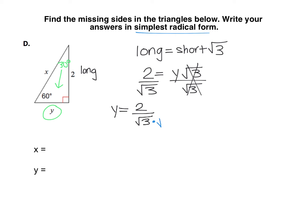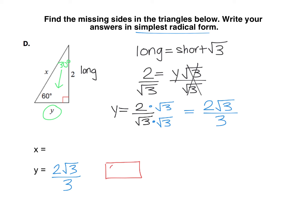To undo a divide by root 3, we multiply both the numerator and denominator by root 3. That makes 2 root 3 on top, and in the denominator, root 3 times root 3 is just 3. So my y value is 2 root 3 over 3. When you type that on Schoology, in the box for the fraction two-thirds, you can just go 2 slash 3, and then drag and drop one of the root 3s next to it. That's how it'll look in your interactive notebook.